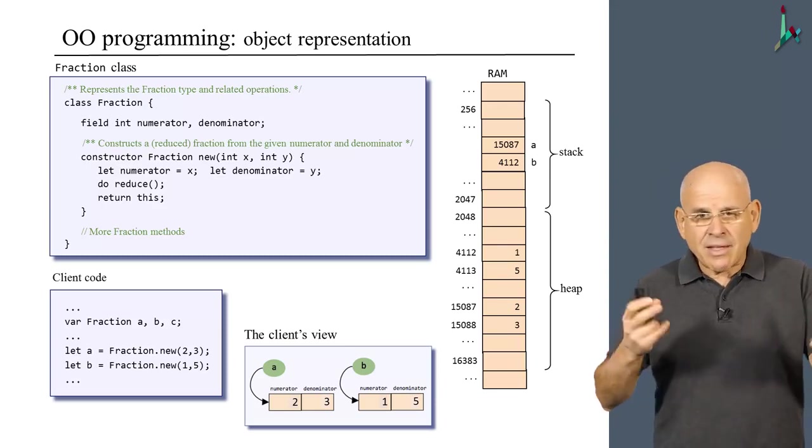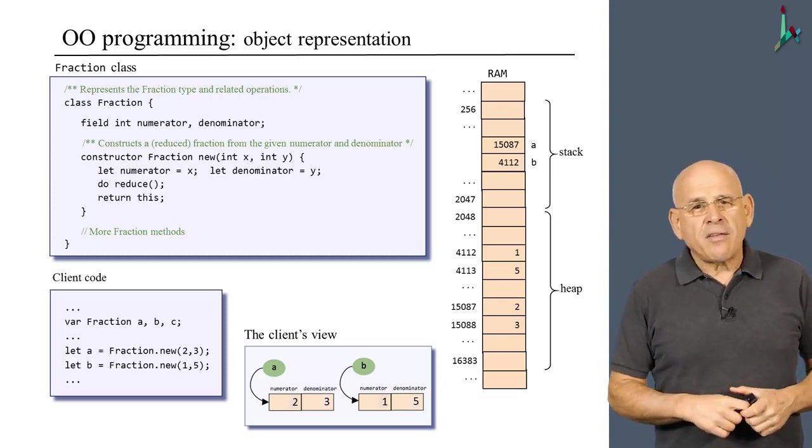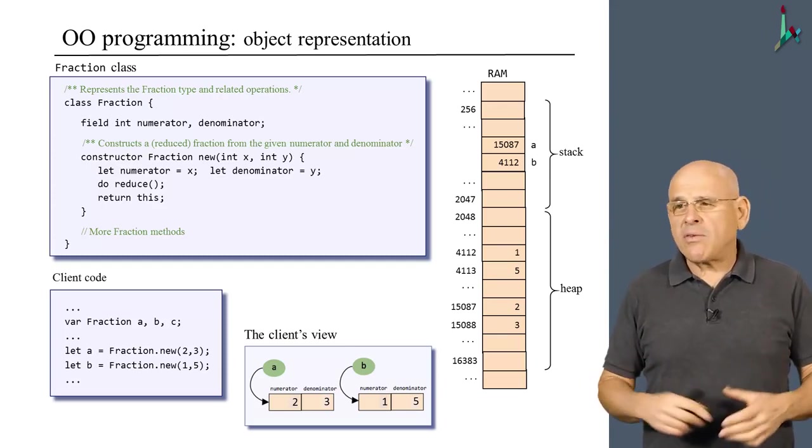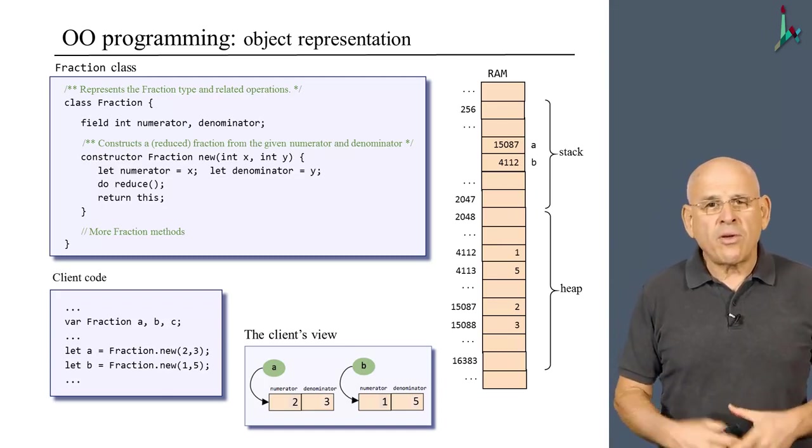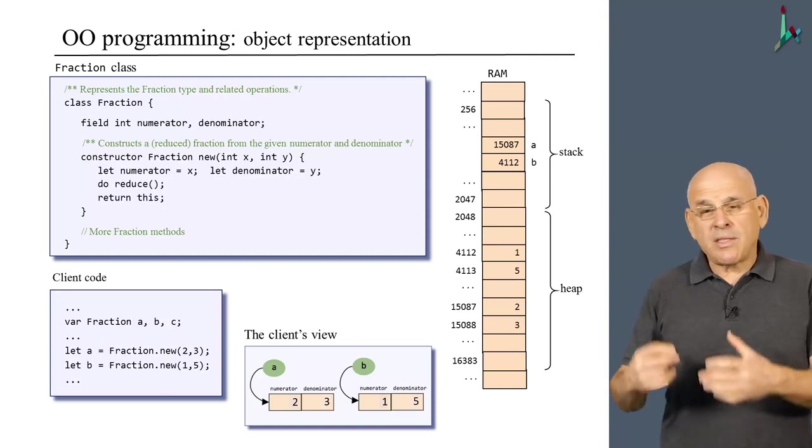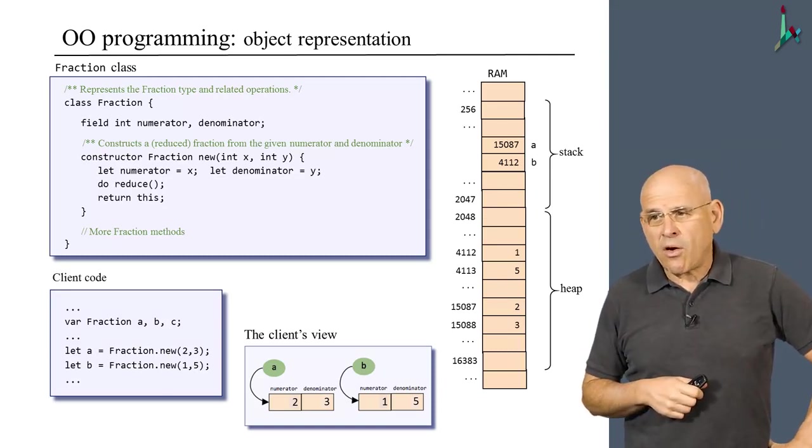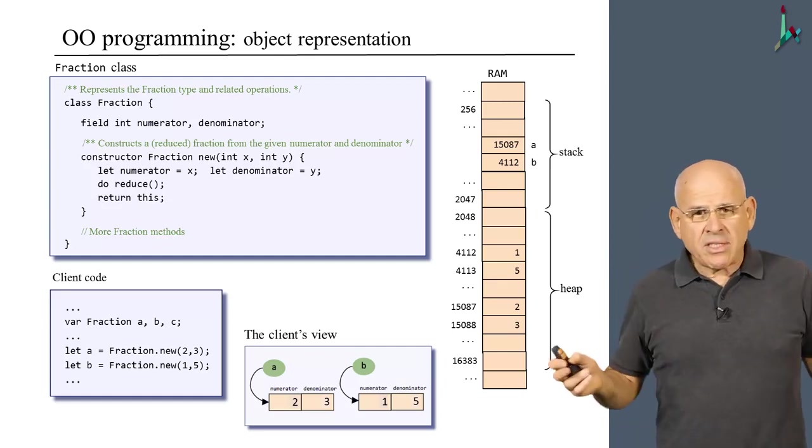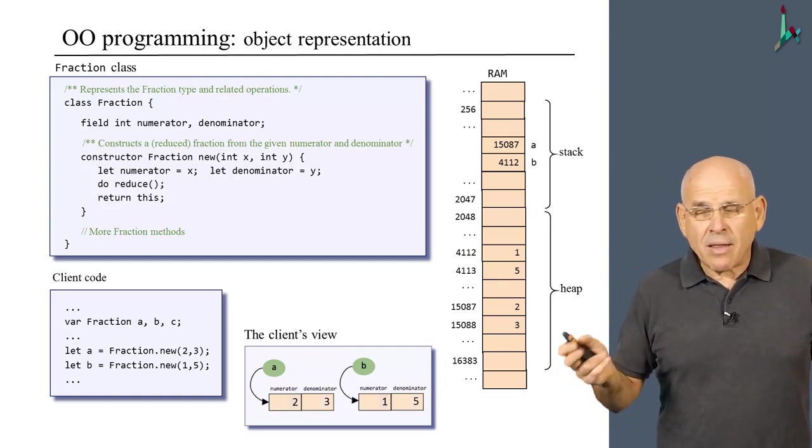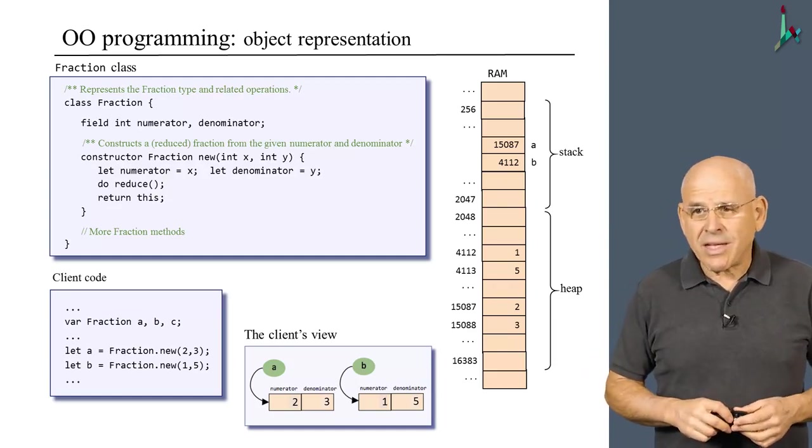We see that we have a variable called a, which contains the number 15087. If we treat this variable as a pointer, and we look up this address in the RAM, we see the number 2. If we look at the next word in the RAM, we see the number 3. And these two numbers comprise the memory block that represents our first object, 2 over 3. And then if we look at the b variable, we see that it contains the address 4112. If we look up this address, we get the same story. So this is the real representation of these objects in the host RAM. All the addresses are contrived. I made them up, and they are not important, obviously, for our discussion.